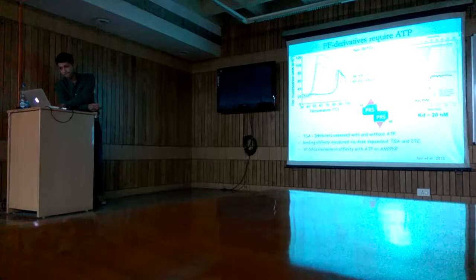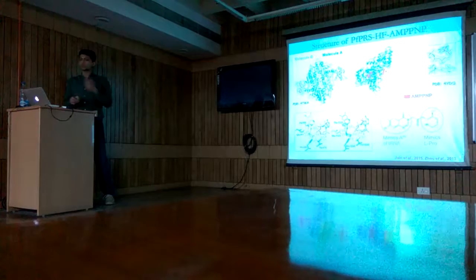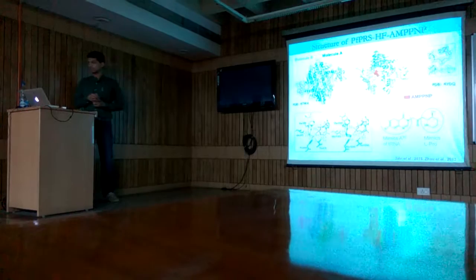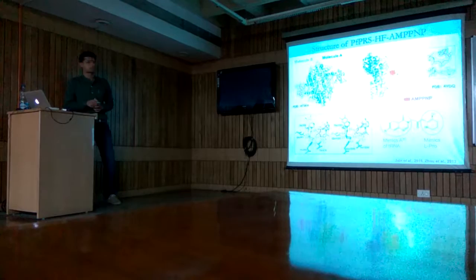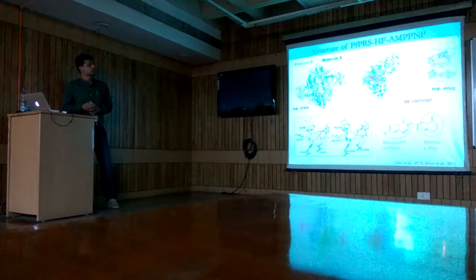With the biochemical and cellular data, we then employed X-ray crystallography and we solved two PRS structures. One was the apo structure without any ligand, and the second was the complex structure with HF and AMP-PNP, which is the analog of ATP, bound in both the active sites of the two protomers. This is the electron density for the two ligands.